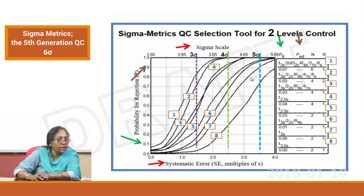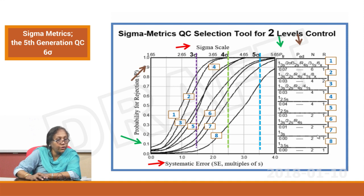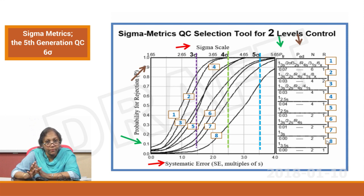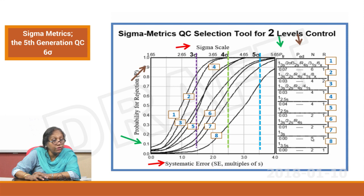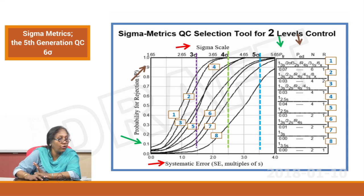Let us look at a few examples. You have a 4 sigma performance here, a 5 sigma performance here, and a 3 sigma performance here. Let us start from 5 sigma: the 5 sigma graph is cutting at graph number 7. For a 5 sigma performance you need to apply only a 1-3S rule — it has no false rejection — and your N should be 2 and your R should be 1. That is how simple it is: if you have a 5 sigma performance, all you need is the 1-3S rule with 2 control levels and 1 run. For 4 sigma: the 4 sigma is cutting graph number 3. Therefore you follow rule set number 3.